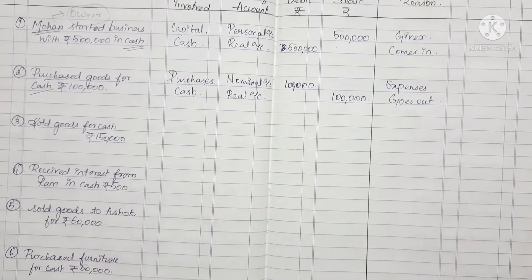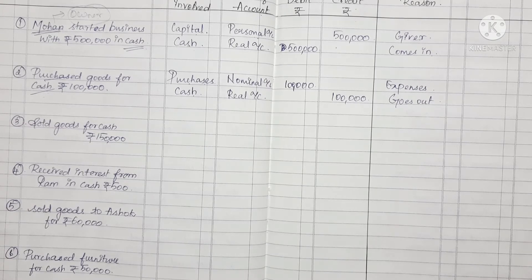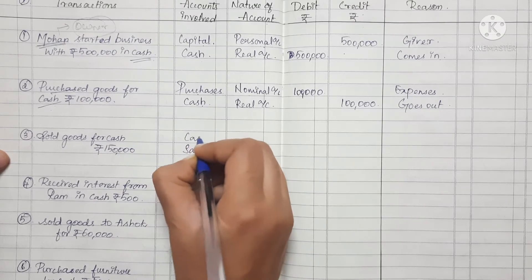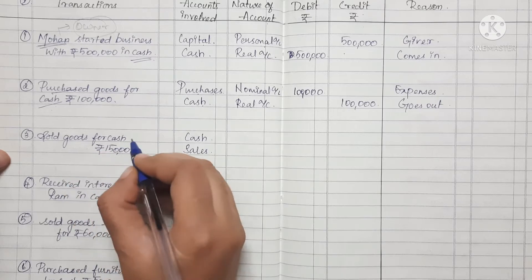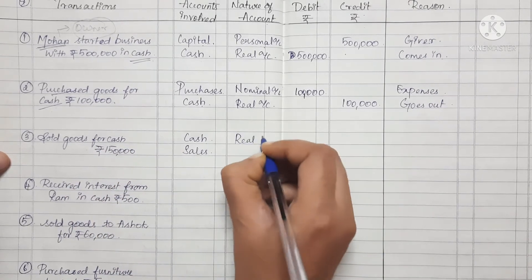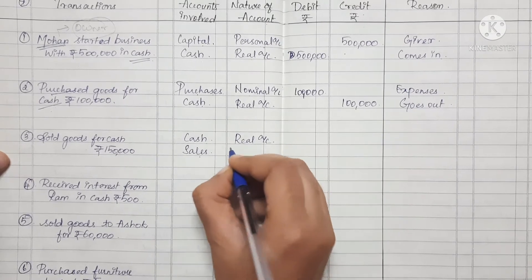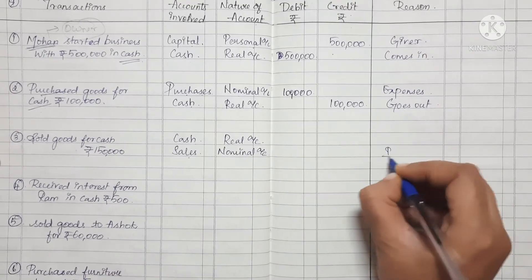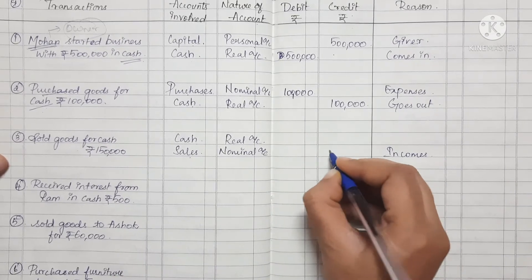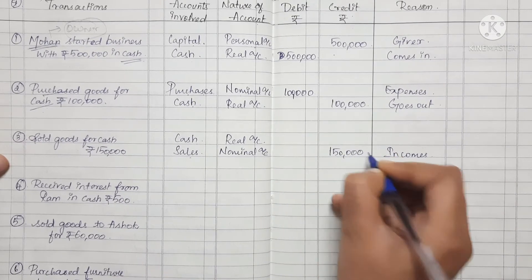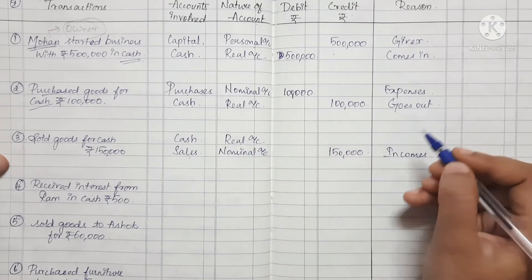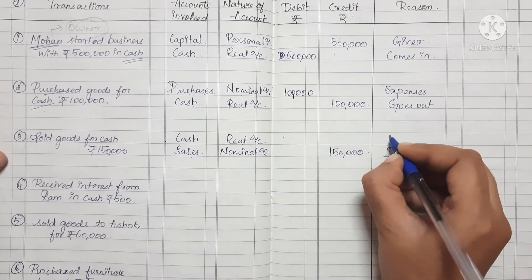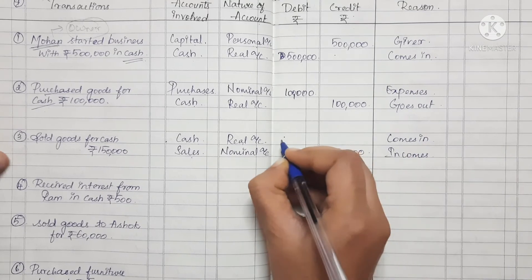Third transaction: Sold goods for cash Rs.1,50,000. We have two accounts: sales and cash. Cash is a real account; sales is a nominal account. Sales is income. Under the nominal account rule, credit all income — so sales is credited. Cash comes in, so under the real account rule, cash is debited.